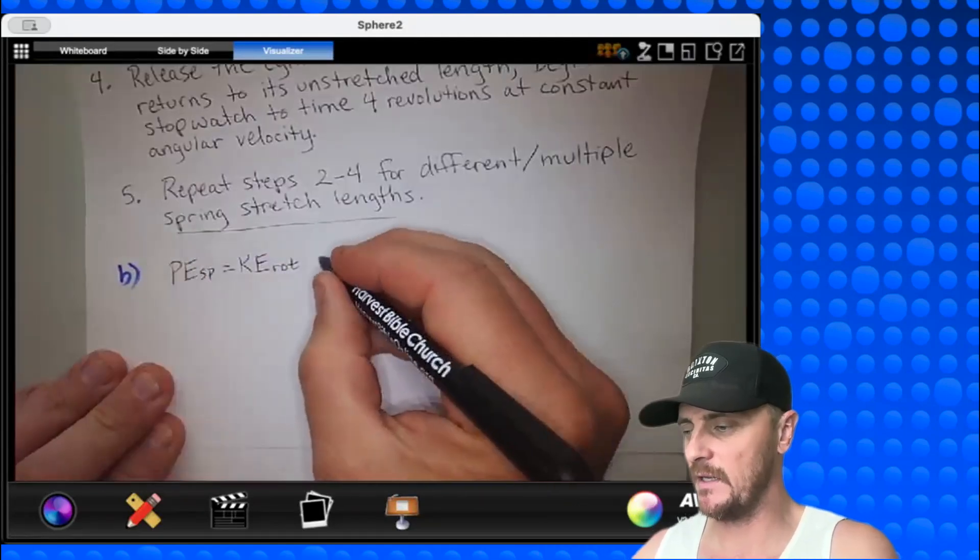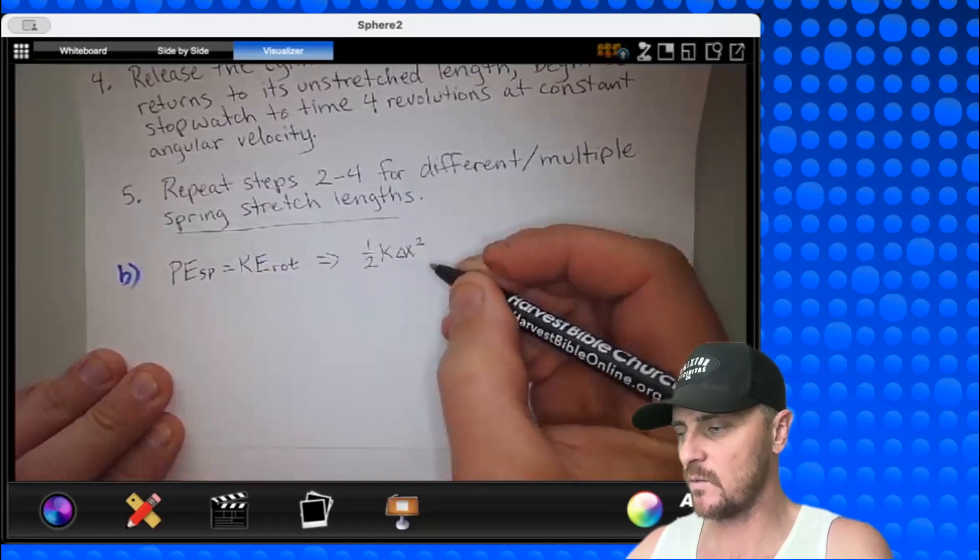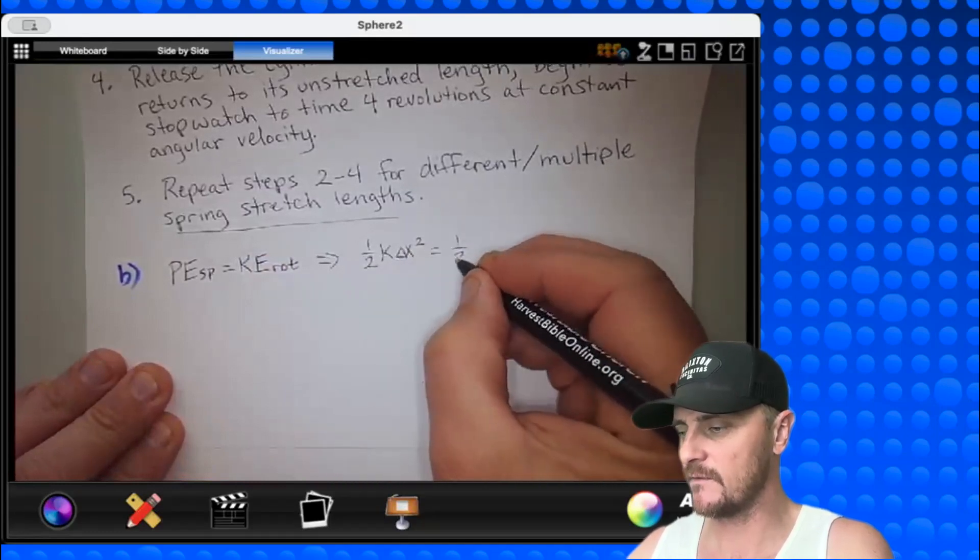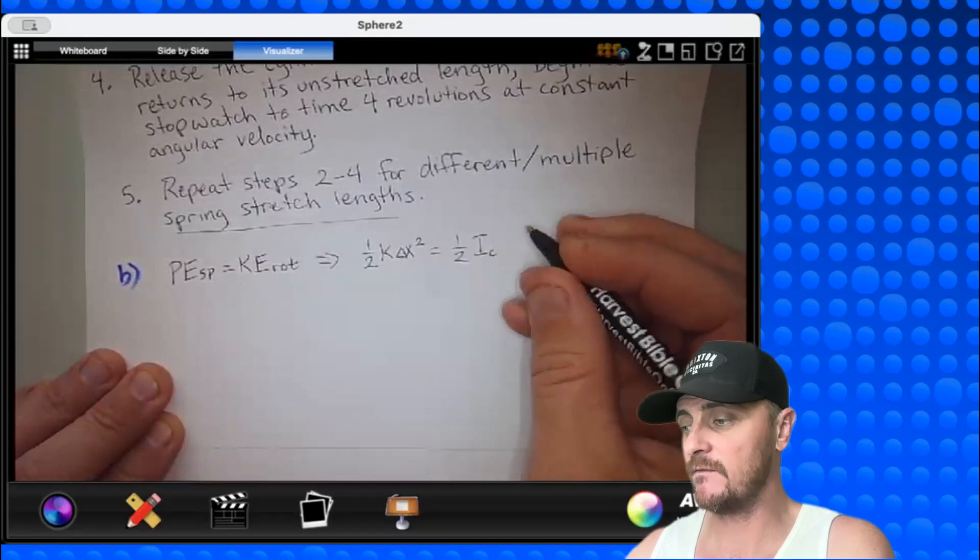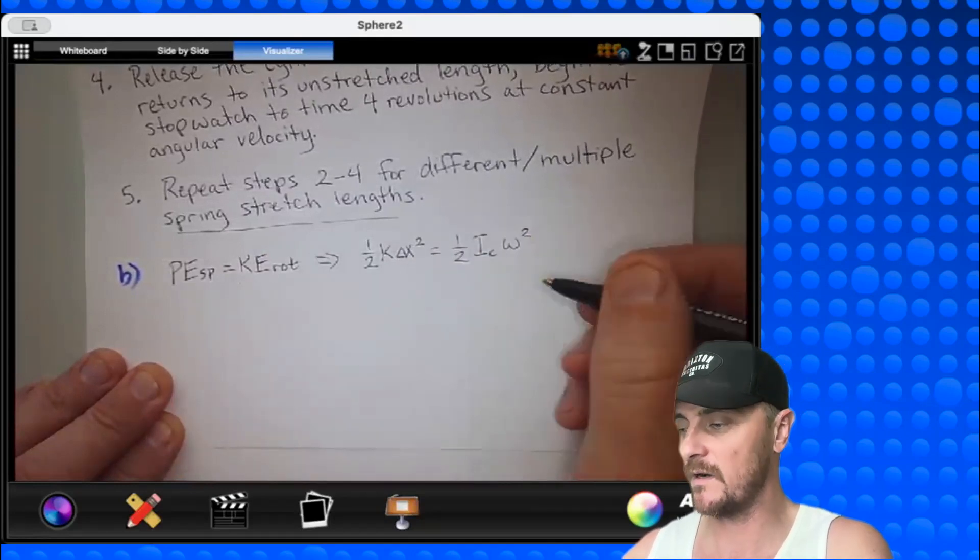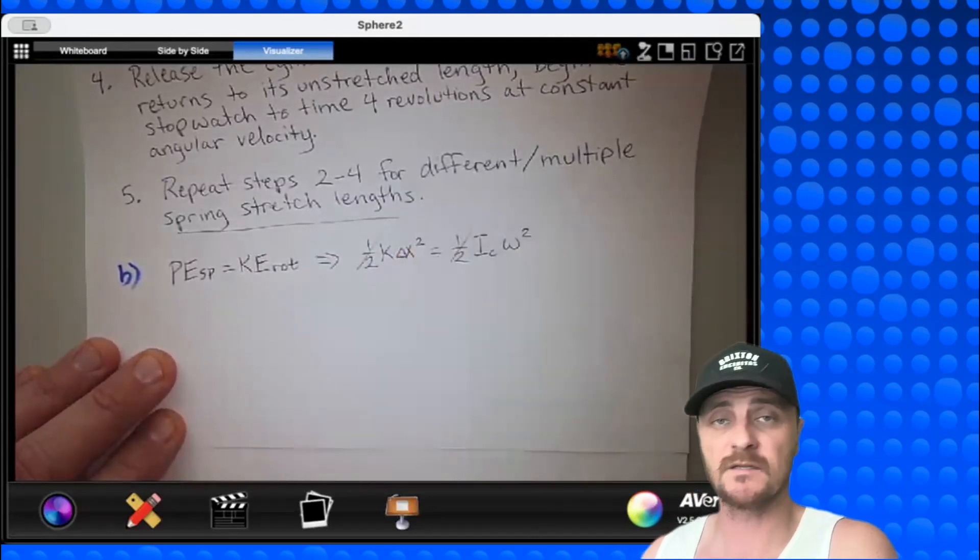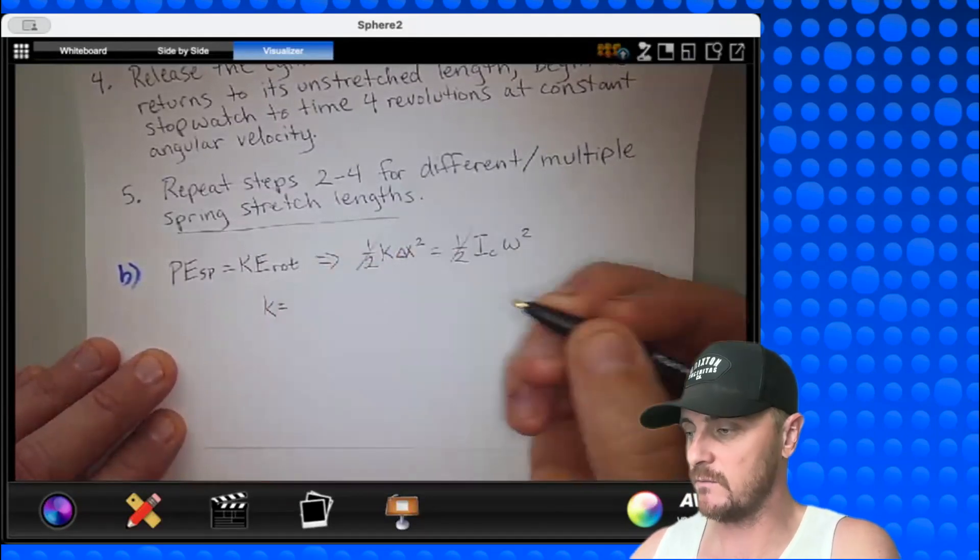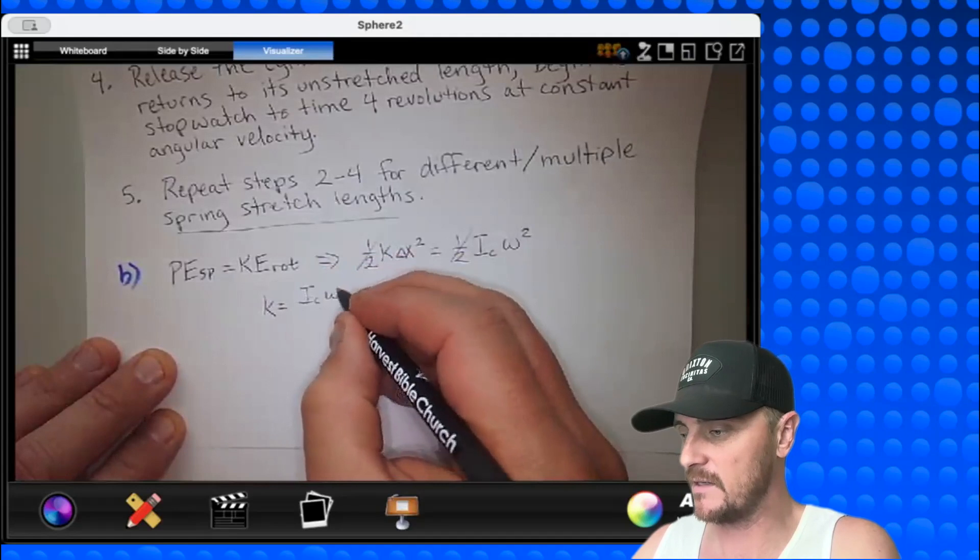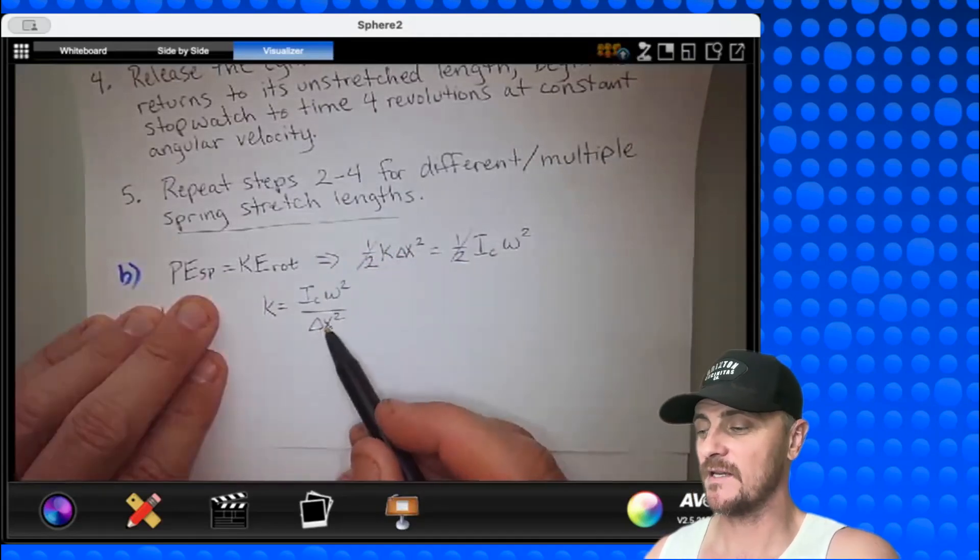Okay, what is PE spring equal to? Well, that would be one-half K delta x squared equals one-half I that we know. The I of the cylinder is called I sub c times omega squared. Alright, and looking at this, our halves cross out instantly. And let's solve for K. K would be equal to IC omega squared all over delta x squared.